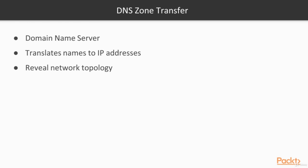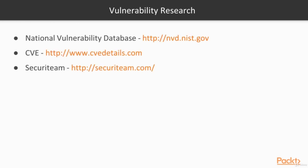DNS zone transfer is another Active Footprinting technique. DNS stands for domain name server, and the domain name server on a network contains valuable records that translate names to IP addresses. This gives us a layout of the network topology and shows us how things are structured. Vulnerability research is also very important — this is where we look up the flaws within systems that we can then attempt to penetrate.